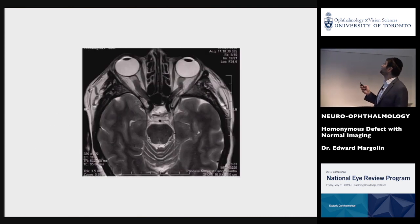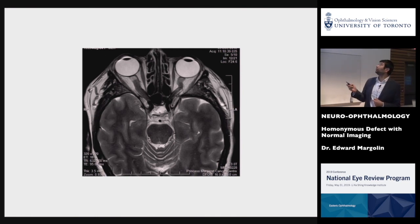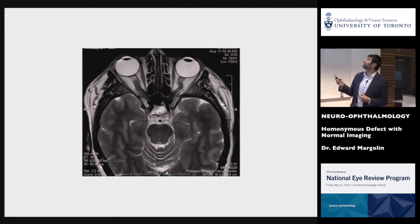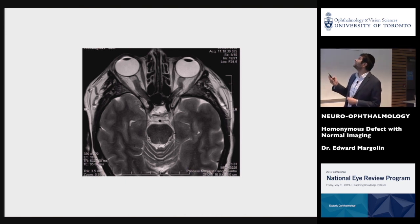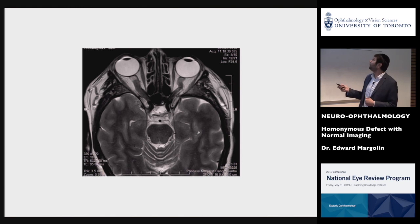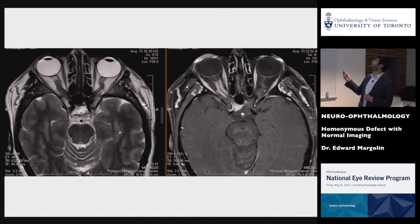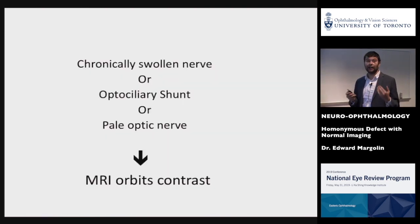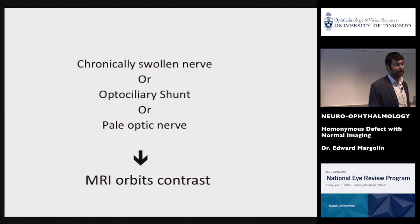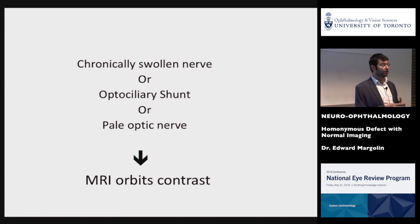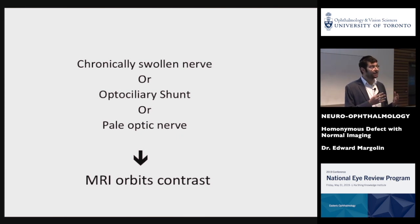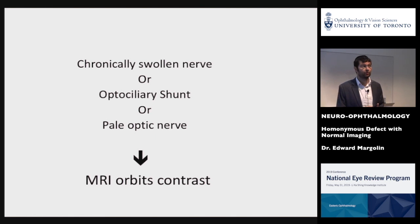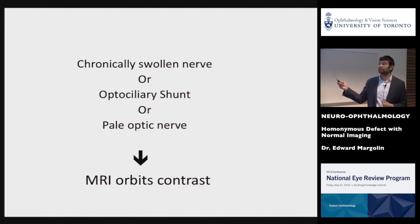Here's an example of my patient with an optic nerve sheath meningioma — a T1-weighted image. If you look carefully, you'll notice that the optic nerve on this side is a little bit thickened, but you've got to really look to notice that. However, as soon as contrast is administered, the optic nerve sheath meningioma becomes very, very obvious. So the algorithm I propose: whenever you encounter a patient with a chronically swollen optic nerve, a patient with an optic ciliary shunt, or varying degree of optic nerve pallor for which you do not have a good explanation, always order an MRI of the orbits with contrast.